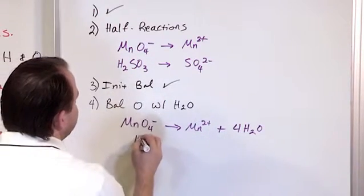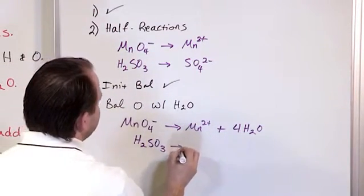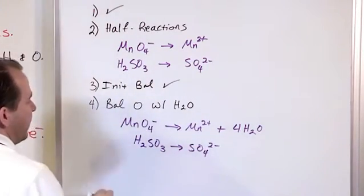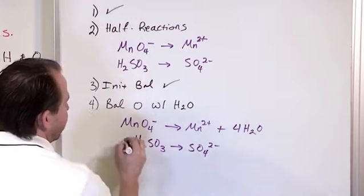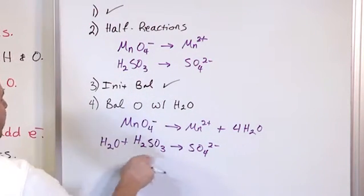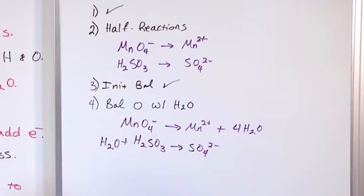So the second reaction is H2SO3 going to SO4 2-. Now I have three oxygens here and I have four oxygens here. So the only way to make that balance is to just put one water. I only need one because I'm trying to make four of those oxygens on both sides.